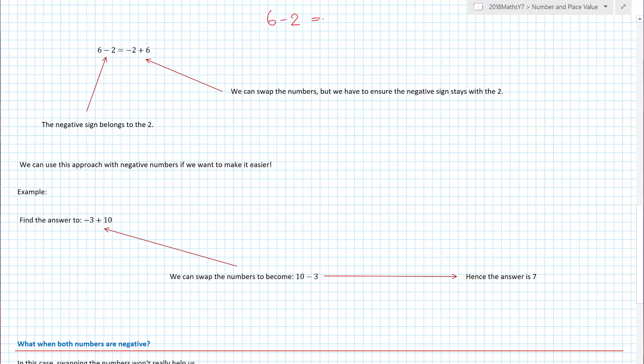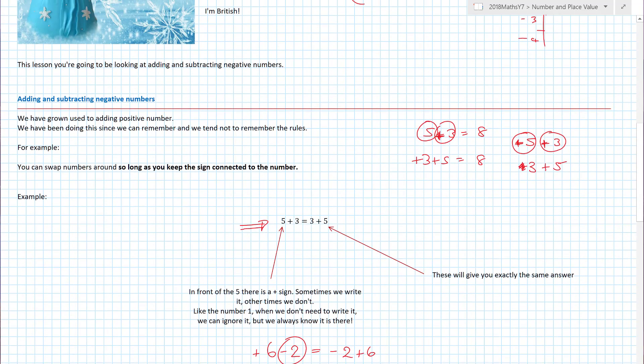Nothing, because we're not dealing with fish. Stop talking about fish! Look at this question here: six minus two. That actually is exactly the same so long as I keep the minus sign with the two as minus two. What's in front of the six? There's nothing there. Yeah, there is. There's a plus. Plus six! Now six minus two, we know, is four, which would mean that minus two plus six must also equal four. And swapping things around can actually make our life much easier with negative numbers.